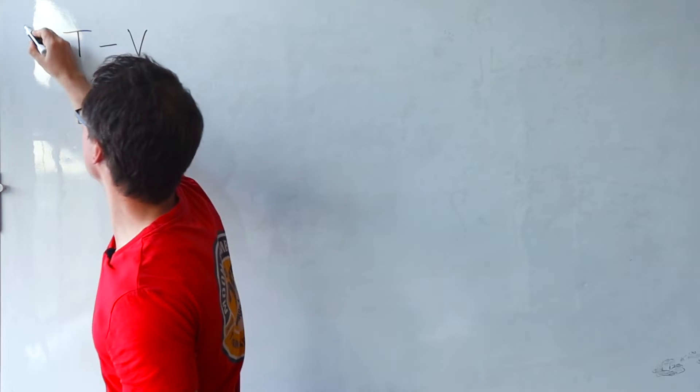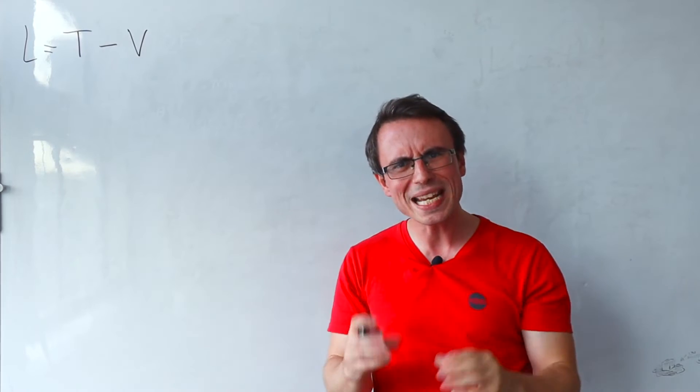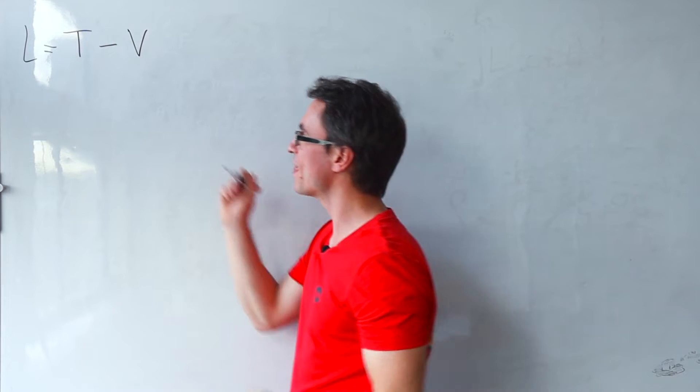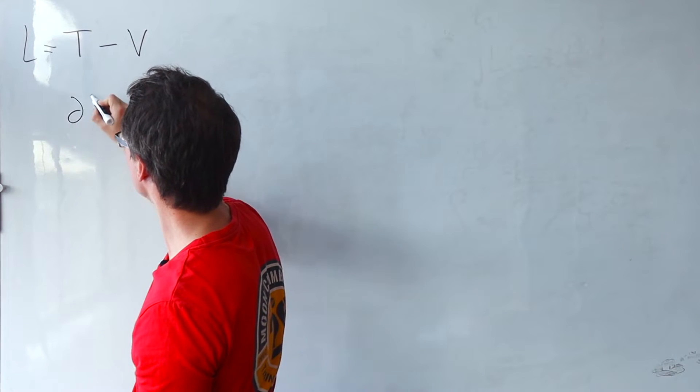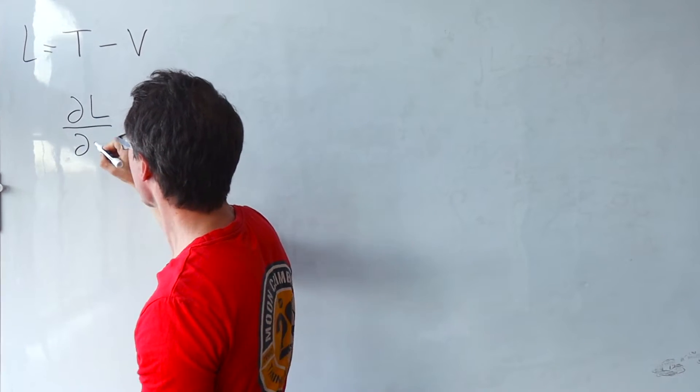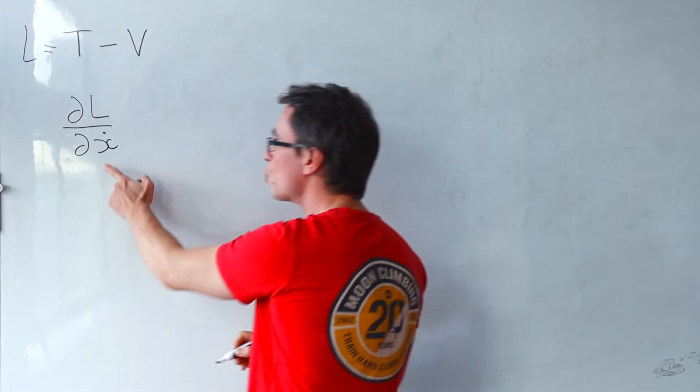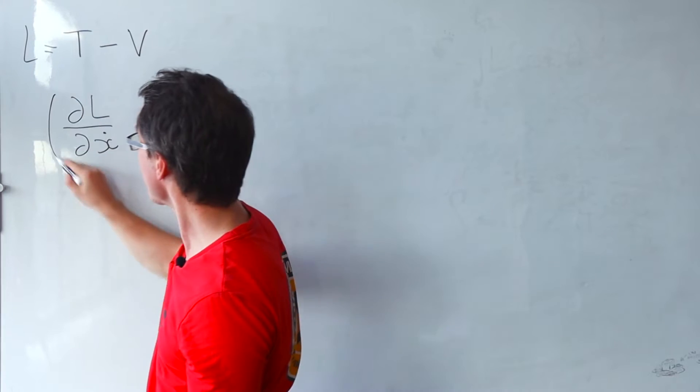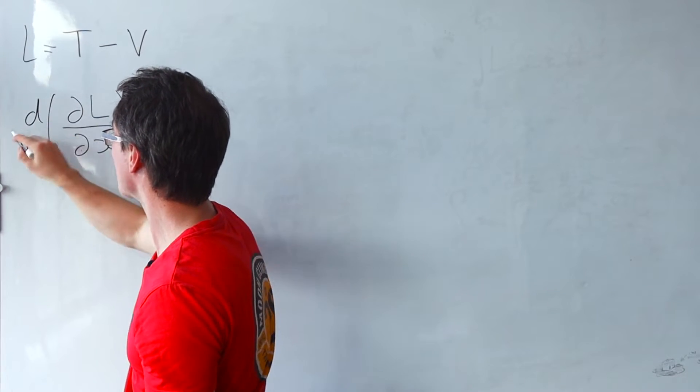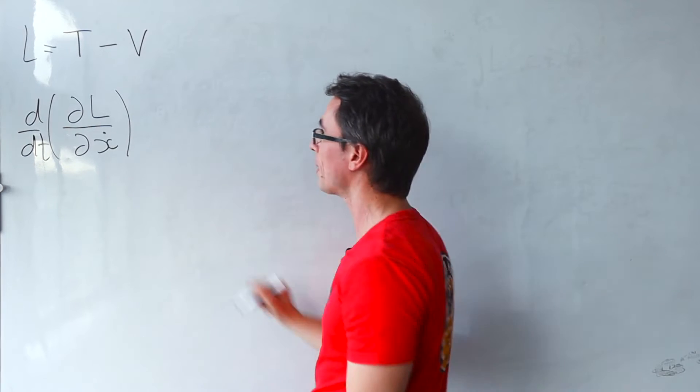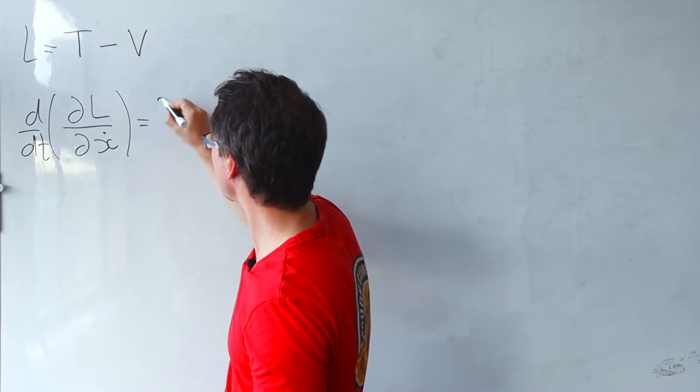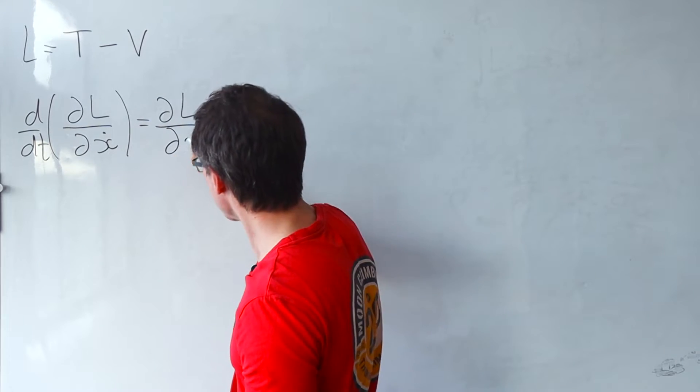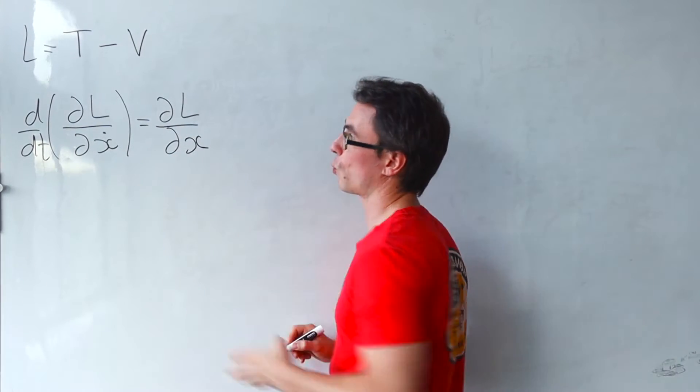This is what is called the Lagrangian. What's really powerful is that I can take this quantity and then take its partial derivative with respect to the derivative of one of the coordinates, and then differentiate that with respect to time. And this will be equal to the partial derivative of the Lagrangian with respect to that general coordinate.